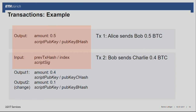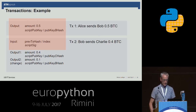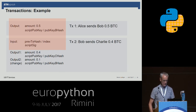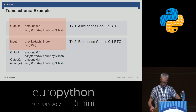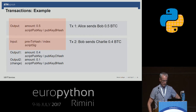We have to deal with public and private keys. A wallet starts from a private key and generates the public key, and the address is derived from the public key. Here is an example: starting from the transaction where Alice sends Bob some amount — in this example, 0.5 Bitcoins — she creates a transaction record which has as output the amount and a script public key. This script contains the public key hashed from Bob's wallet, and this is nothing else than the address.